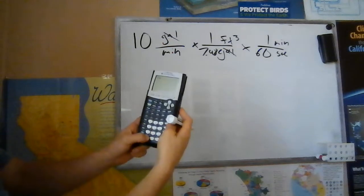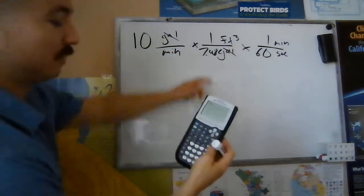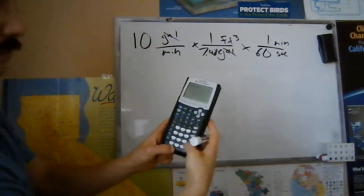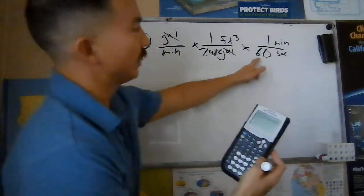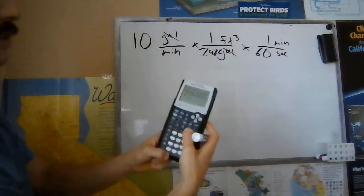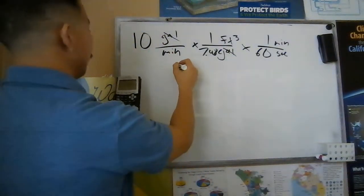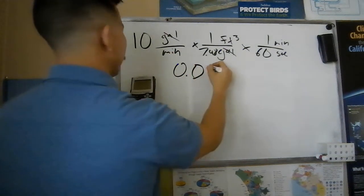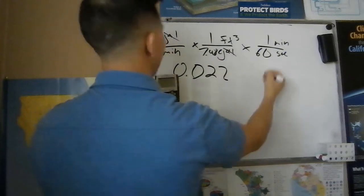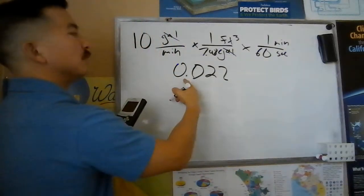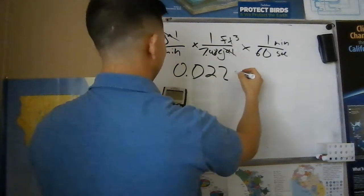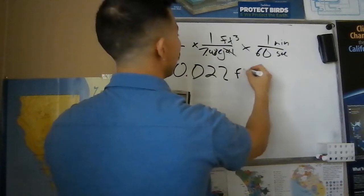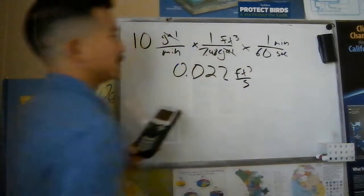So I'm going to take my calculator. I'm going to do 10 gallons per minute. I'm going to divide by 7.48 because it's on the bottom. I'm then going to divide by 60 seconds because it's on the bottom and I get 0.02228. We're going to put 0.022 and this is going to be our cubic feet per second.